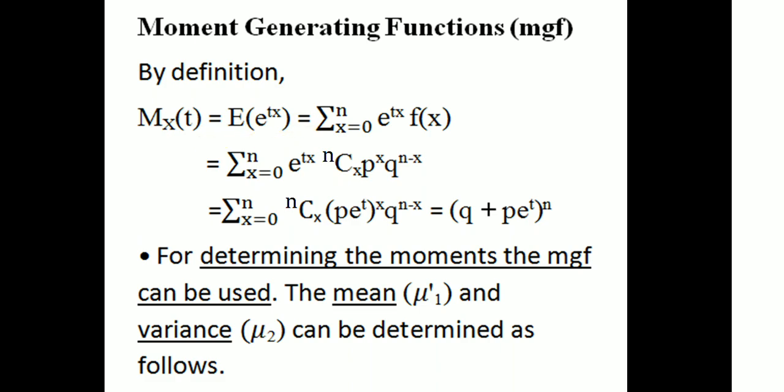The expectation of e raised to tx, where we have e raised to tx and p raised to x, gives us e raised to t all raised to x, times p raised to x. That is the summation from x equal to 0 to n of nCx times p times e raised to t, all raised to x, times q raised to n minus x.